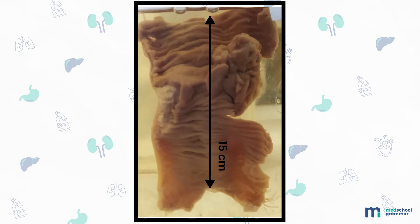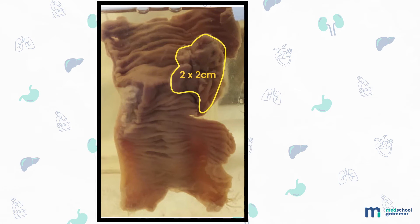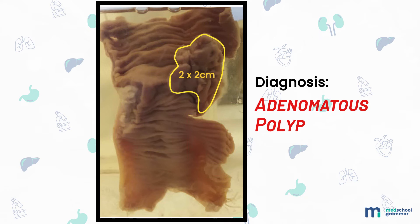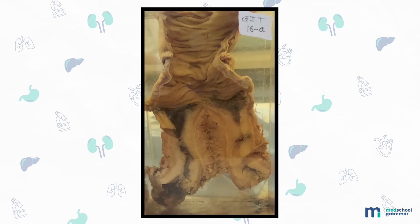Here on the screen you have a specimen of the intestine measuring 15 centimeters in length. The serosa or external surface is unremarkable, and the internal mucosal surface shows a sessile polyp of 2 by 2 centimeters with a cauliflower-like appearance. Diagnosis: this is an adenomatous polyp.